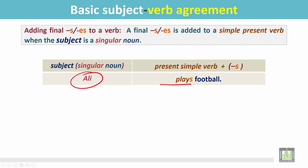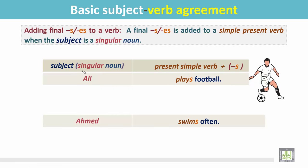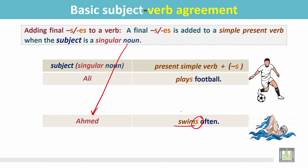The verb 'play' is in the present simple, so we add S to the verb: Ali plays football. Another example: Ahmed is a singular noun, and we add S with the simple present form of the verb 'swim' — Ahmed swims often.